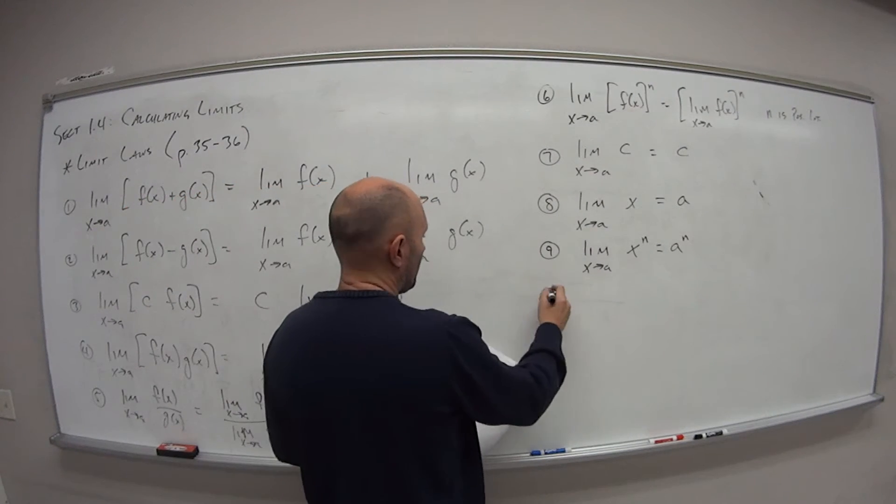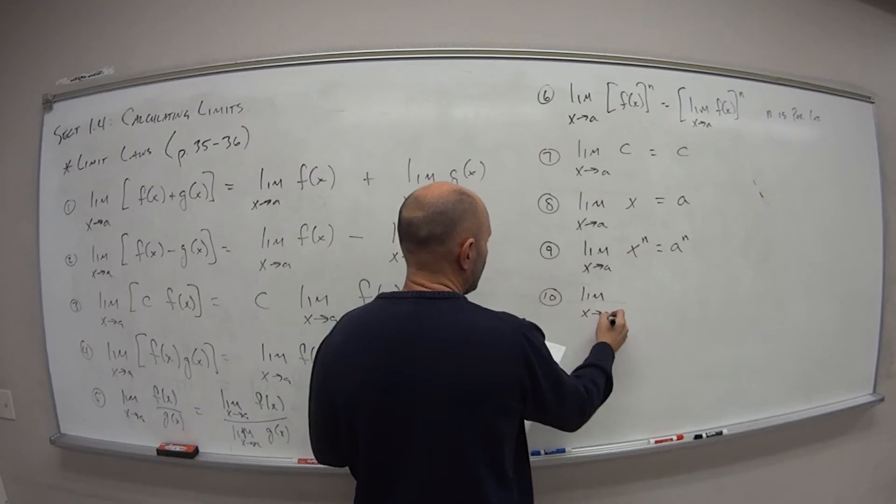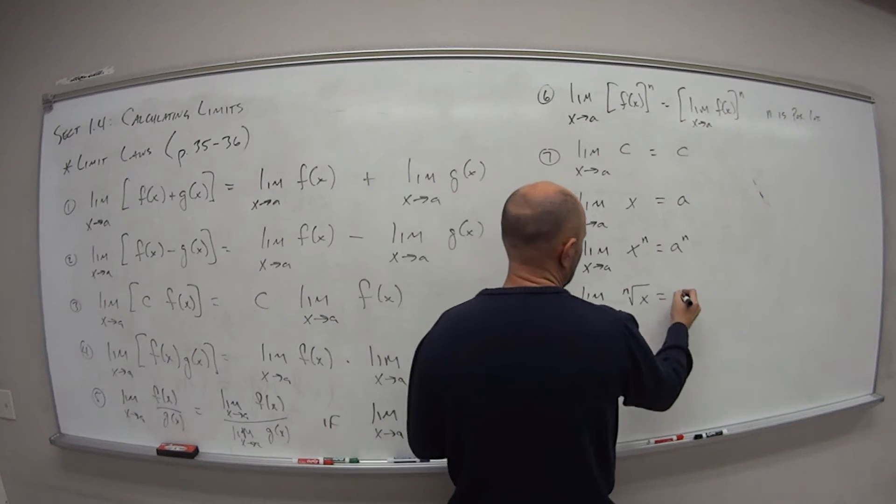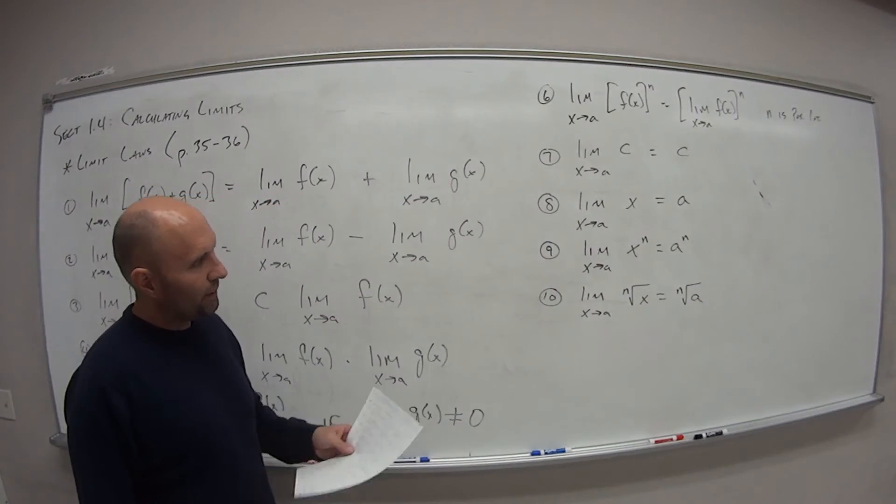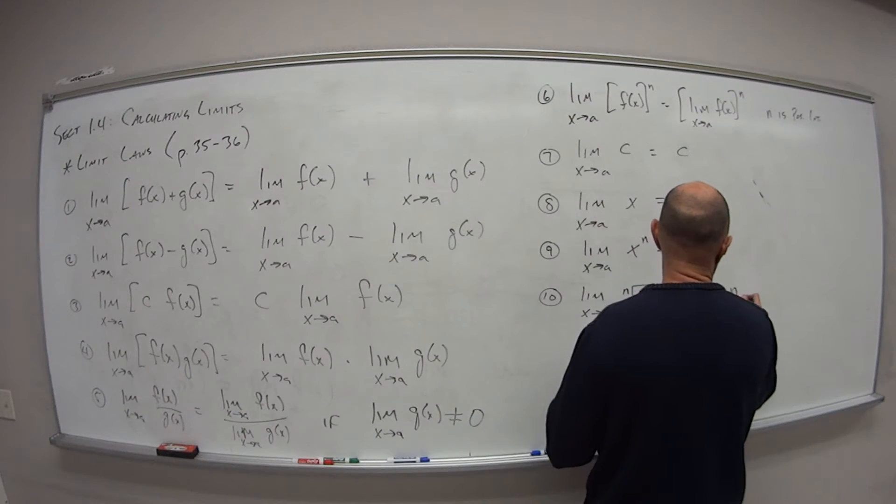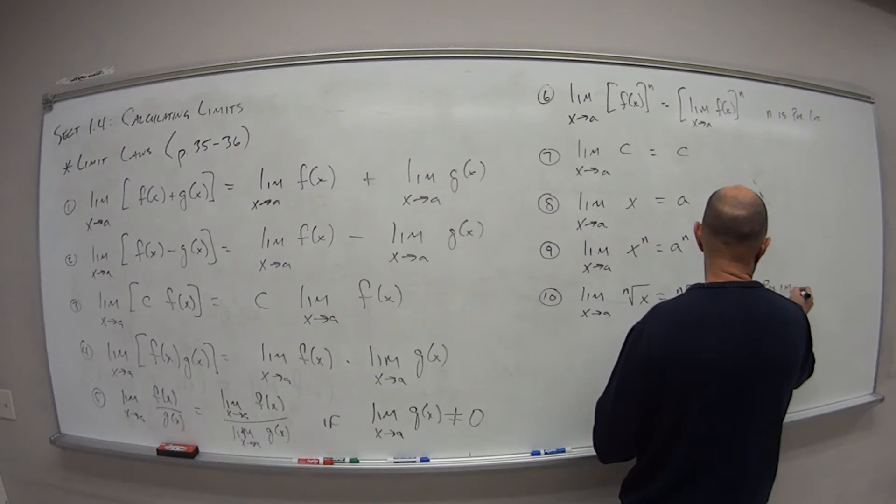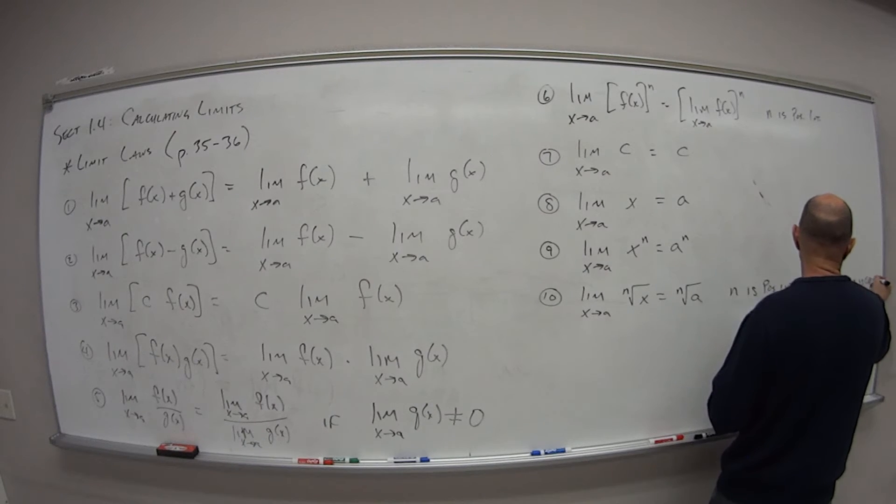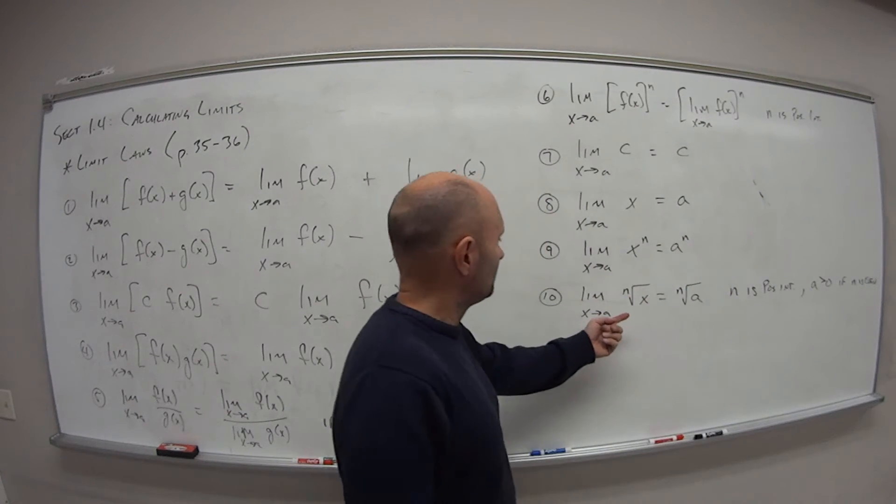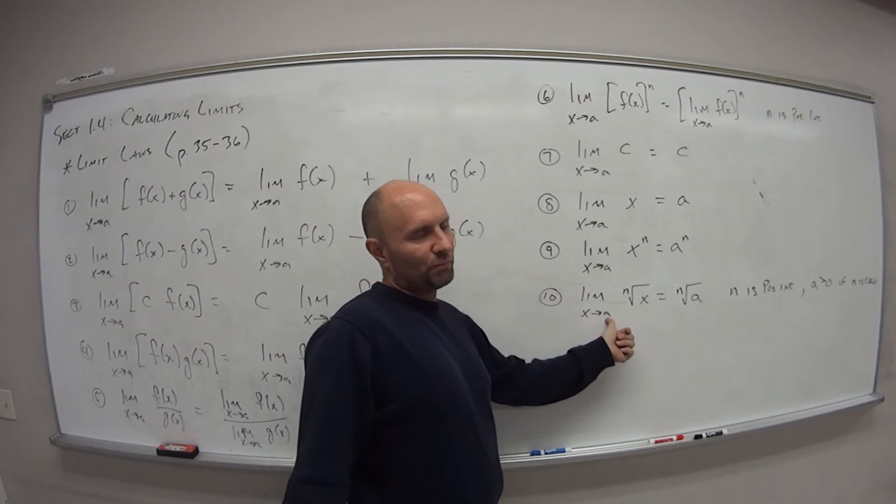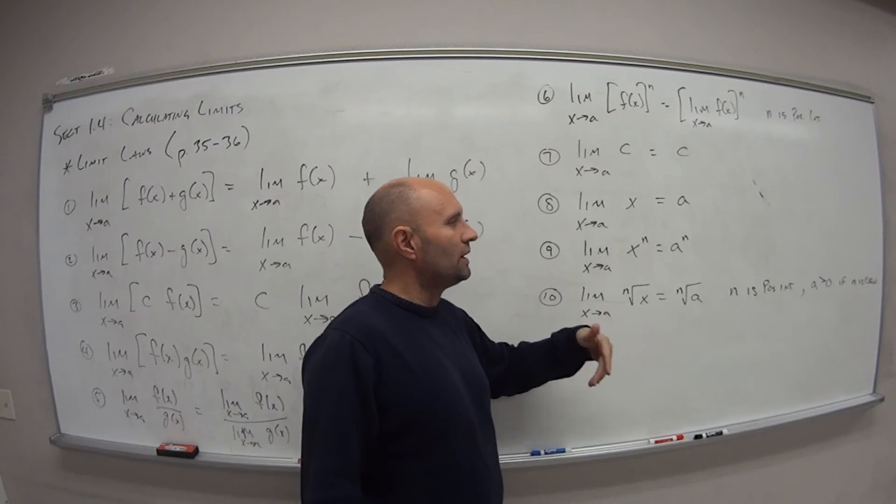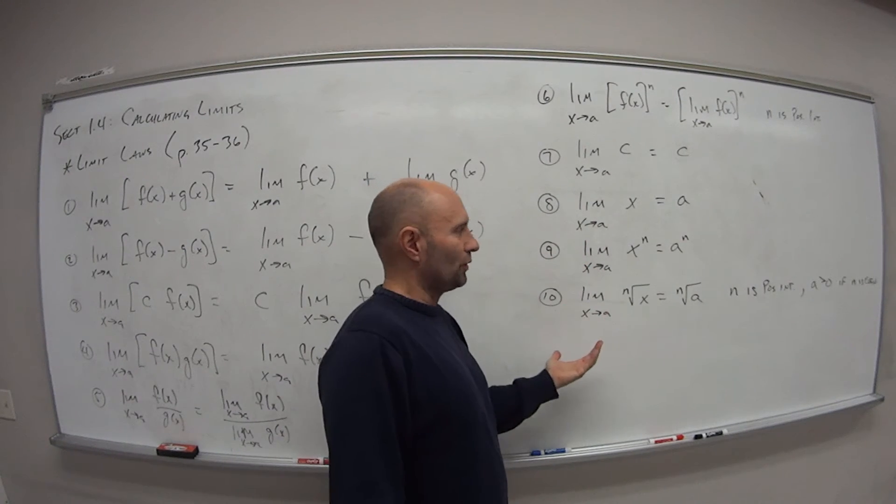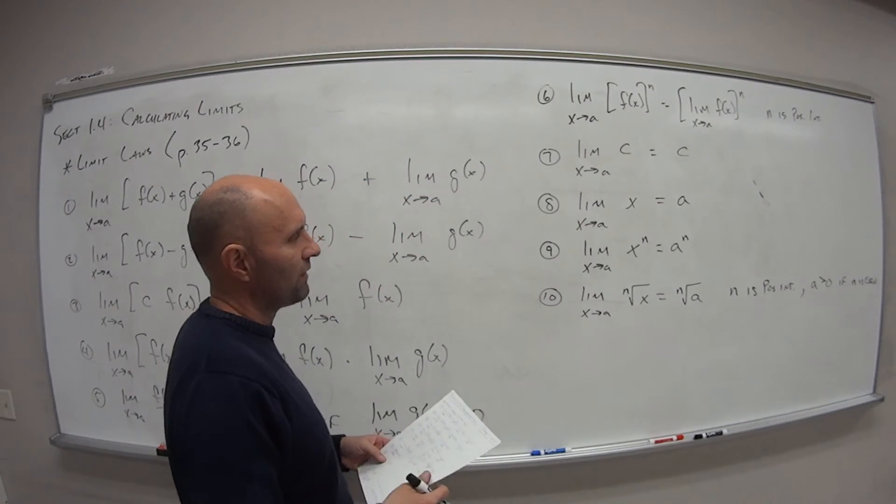My roots: so the limit as x approaches a of the nth root of x is equal to just the nth root of a. So because we have these roots, a couple restrictions. First, n is a positive integer, and a is greater than zero if n is even. So if I have the fourth root of x, well, I can't have x approaches negative three, because it has to be in the domain. So because there's nothing in the negative part of the graph, it doesn't really make sense. So a has to be positive if n is even.